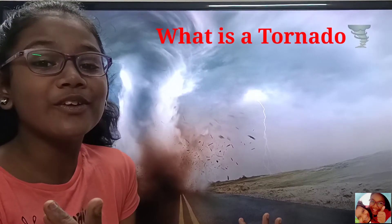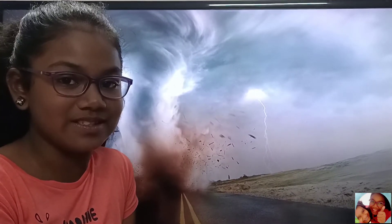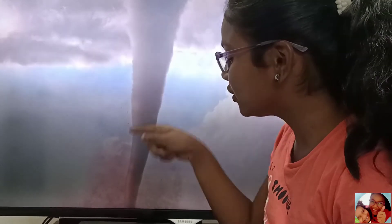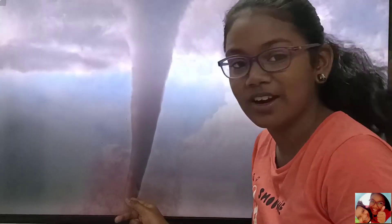What is a tornado? Tornadoes are also called twisters. They are a funnel cloud, rapidly rotating columns of air. It stretches from the storm to the ground. To be a tornado, it must touch the ground.